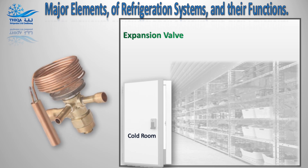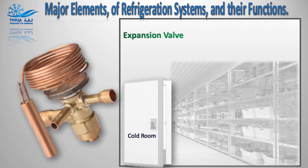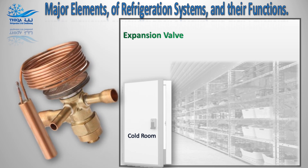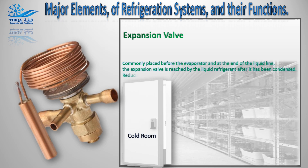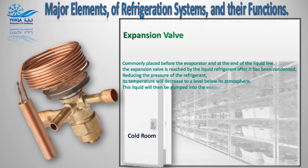Number 3, the expansion valve. Commonly placed before the evaporator and at the end of the liquid line, the expansion valve is reached by the liquid refrigerant after it has been condensed. Reducing the pressure of the refrigerant, its temperature will decrease to a level below its atmosphere. This liquid will then be pumped into the evaporator.